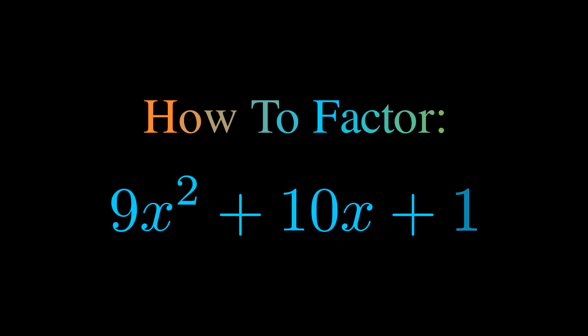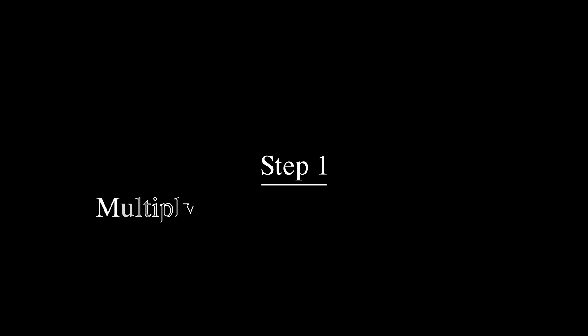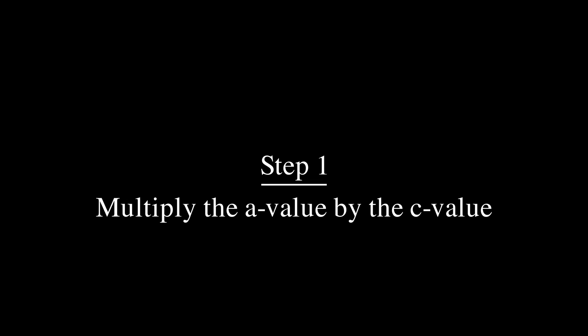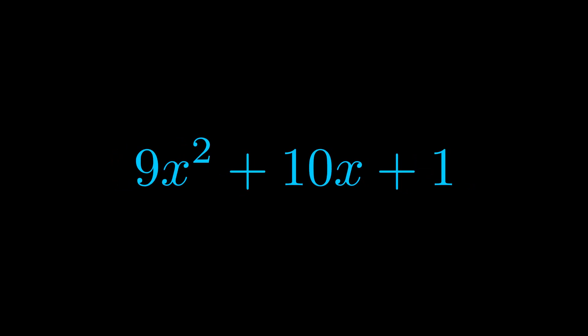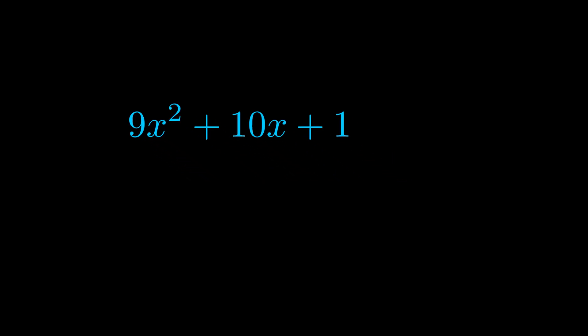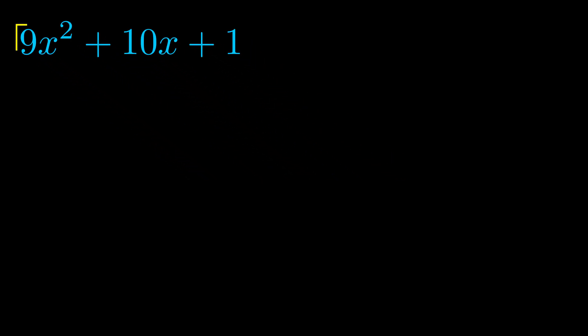In this video we're going to learn how to factor this equation. Step one when factoring an equation of this form is to multiply the a value by the c value. Here we can see that our a value is the coefficient on the x squared term, and our c value is the constant term. When we multiply these two values we get this value here in magenta.